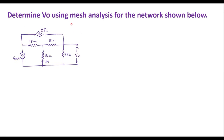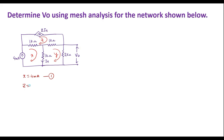Now let's solve this using mesh analysis. Since we have three loops, we define three currents: let the current through loop one be X, through loop two be Y, and through loop three be Z. We can observe that in loop X, 4 milliamps is flowing directly, so X equals 4 milliamps — equation 1. Similarly, in loop Z, current 2IA is flowing, so Z equals 2IA — equation 2.